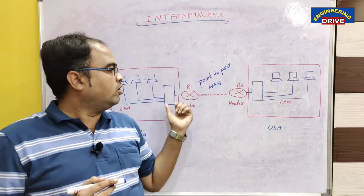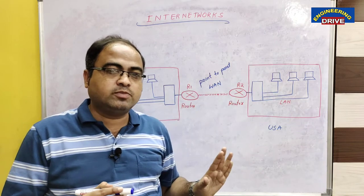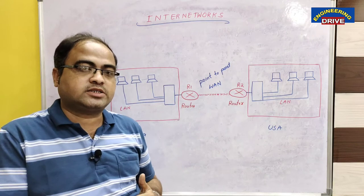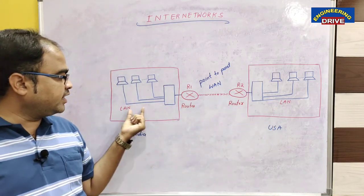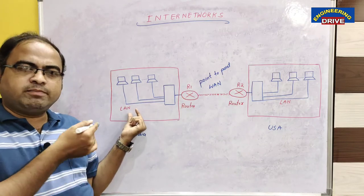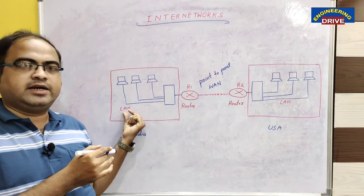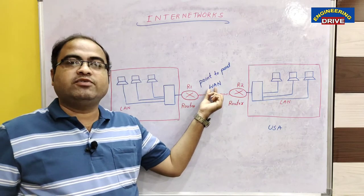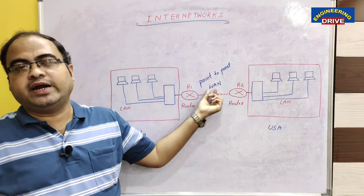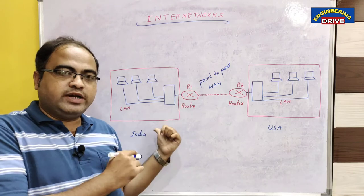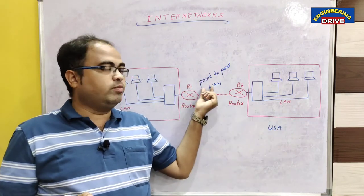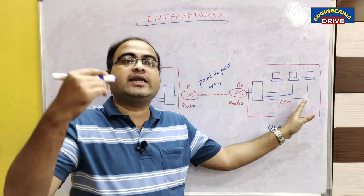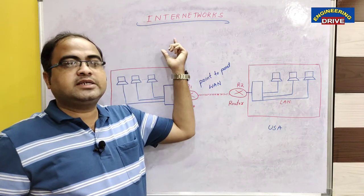We call this concept inter-networks. Inter-networks is a concept in which one network is connected with another network. To form a network we use devices, but to form an inter-network we need to connect one or more networks. To connect devices locally we use LAN, but to connect different types of networks we require a wide area network. In simple terms, one LAN of one country is connected to another LAN of another country with the help of a wide area network — this is known as inter-networks.